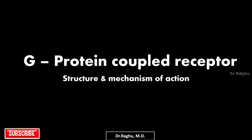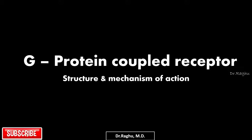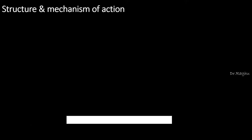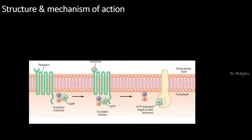In this video, I am going to talk about G-protein coupled receptor, the structure and the mechanism of action. As we are seeing here in the diagram, this is the cell membrane — this is the outer part of the cell membrane where we have the extracellular fluid, and this is the inner part of the cell membrane, and this is that receptor.